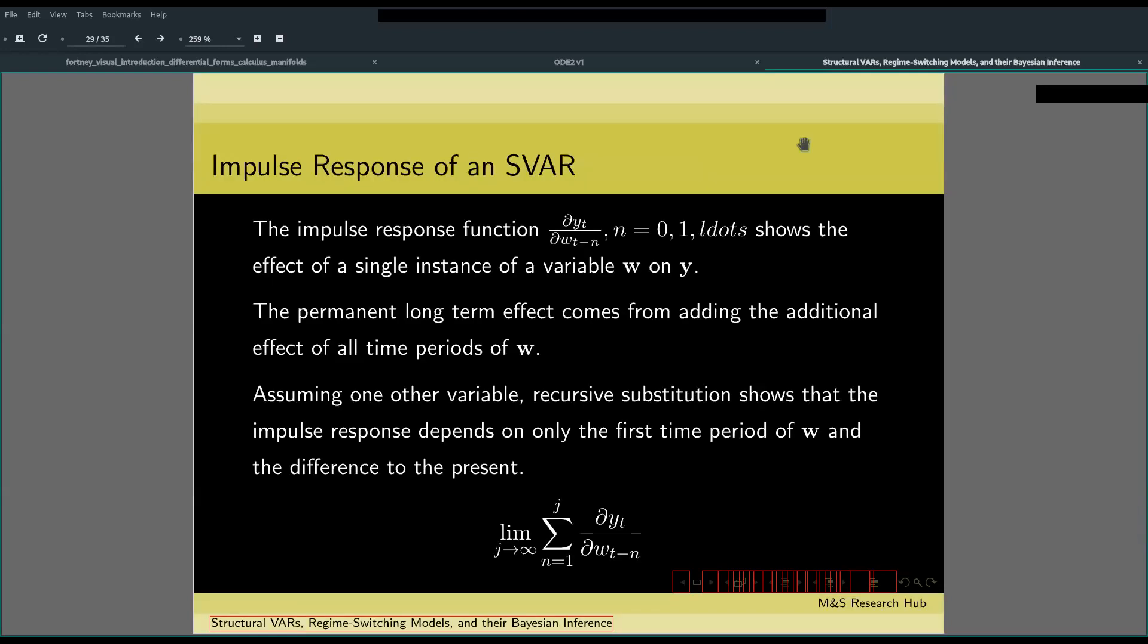For vector autoregressions, we can also obtain what's called an impulse response function. The impulse response function shows the effect of an increase or decrease of a single instance of a variable on the dynamics of other variables in the dynamic system.